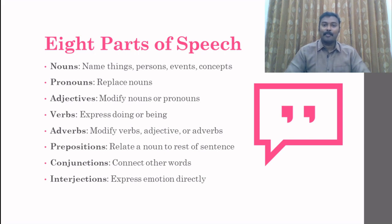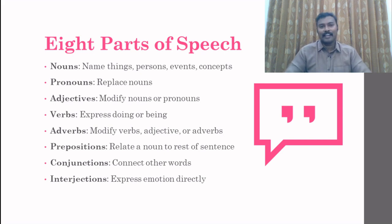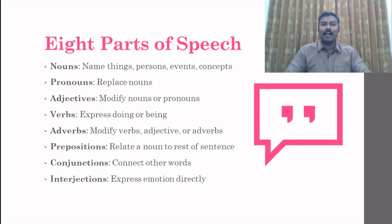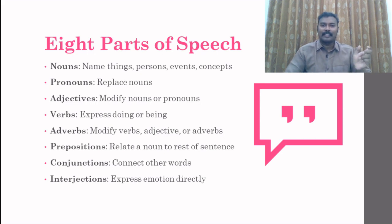Conjunctions are words that connect words, concepts, phrases, clauses, or sentences. Finally, interjection is a word which expresses emotion directly. In other words, interjection is a word which emerges out of a sudden emotional encounter — it is an emotional expression. These words come out of sudden emotion and are with high impact.